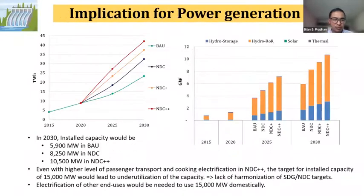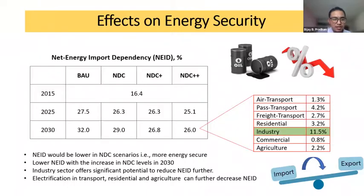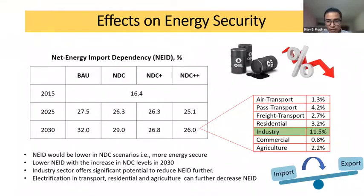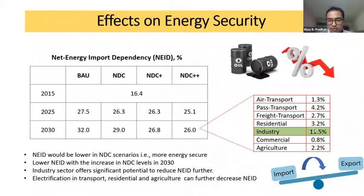We also calculated the net energy import dependency. The net energy import dependency would be lower in NDC scenarios - that is, the country would be more energy-secure. There would be lower NEID with the increase in NDC levels in 2030. The industry sector offers significant potential to reduce import dependency, and electrification in transport, residential, and agriculture can further decrease import dependency.